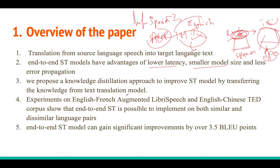In this paper they use the English-French Augmented LibriSpeech dataset released in 2016, as well as a crawled dataset from online consisting of English audio and Chinese text. They show that using the knowledge distillation method gives a 3.5 improvement in BLEU score.